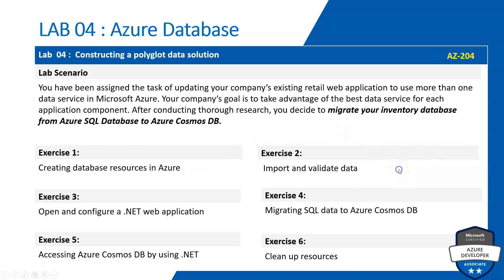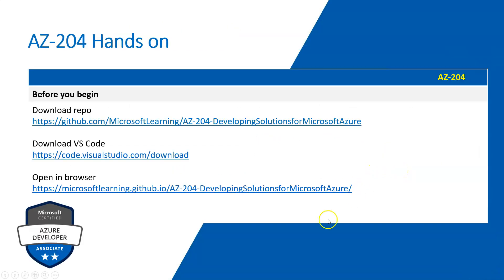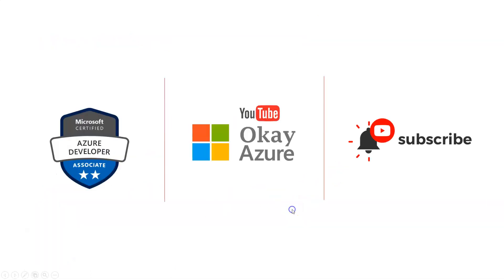Before we dive into the practical session, you need a few things ready. First, download the GitHub repository — the URL is in the video description. You also need VS Code so you can write code, and you need the lab instructions URL open in your browser. Thank you for watching and I'll catch you in the next video.